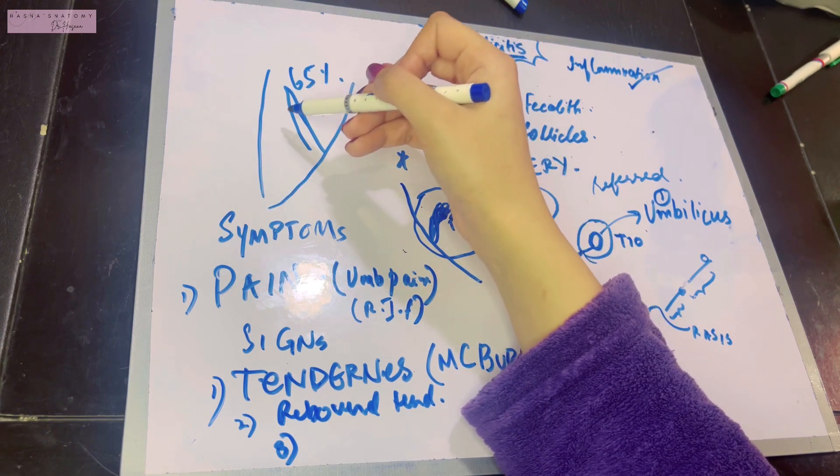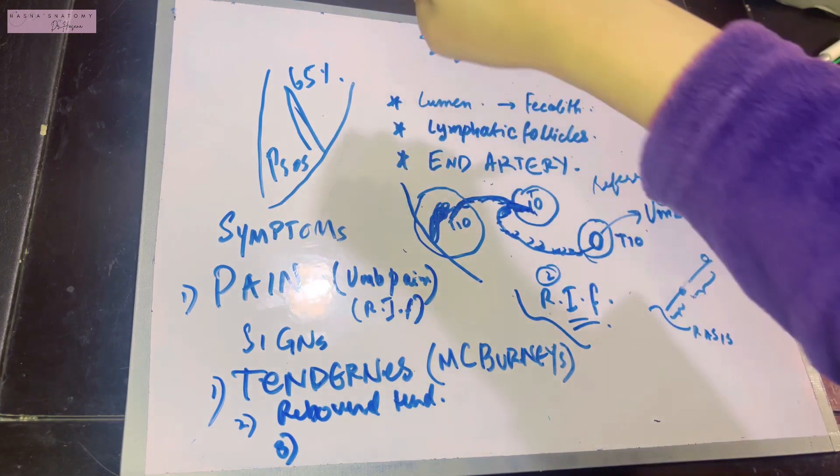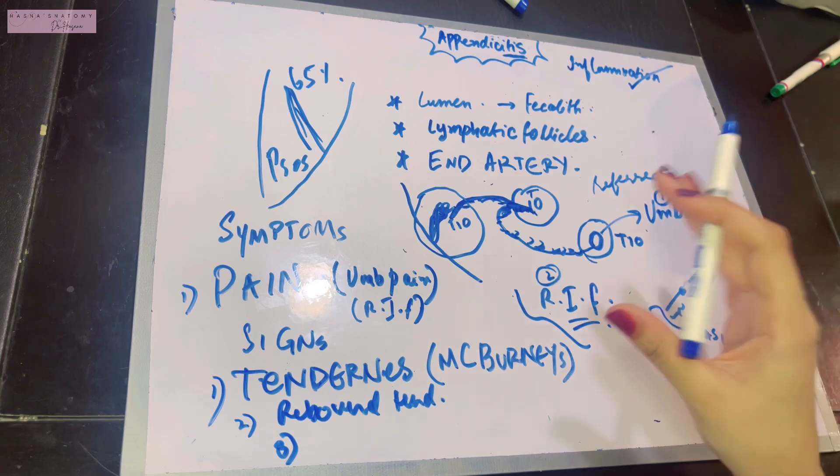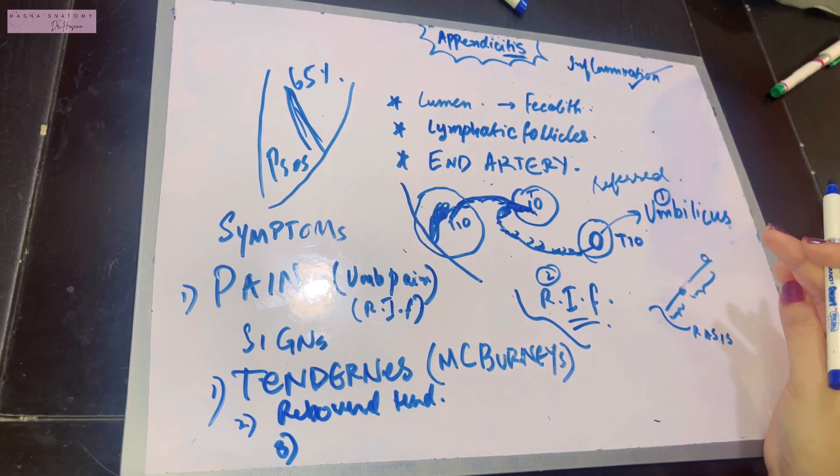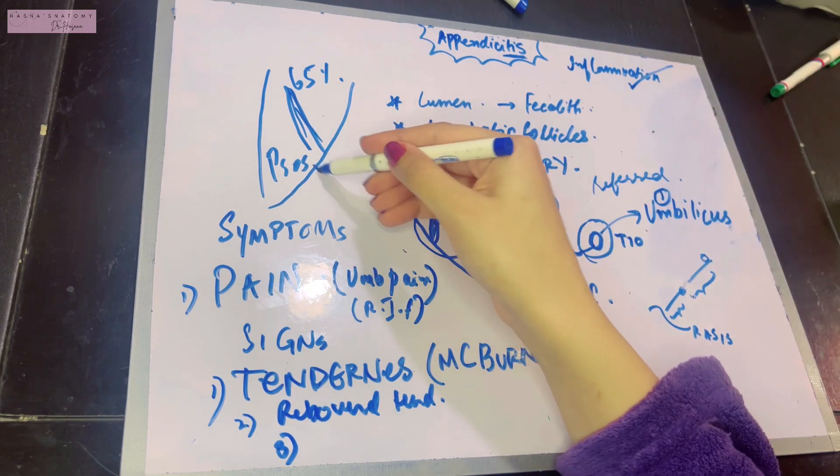This is the psoas major muscle. When you extend the thigh, the psoas major will contract, causing pain in the person's lower back. That's a sign that the appendix is retrocecal in position. The second sign you can perform is related to the pelvic position of the appendix.